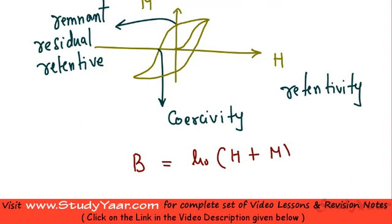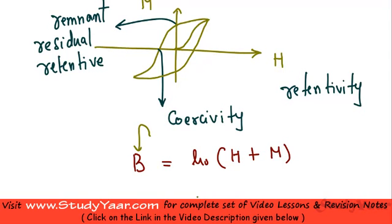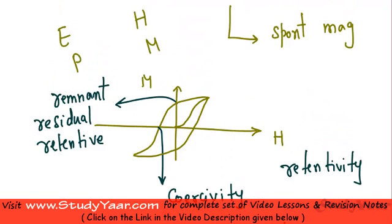Recall that the magnetic flux density is given by B = μ₀H + M. In a ferromagnet, the magnetization term M is more pronounced and basically determines your magnetic flux density. So you can say B is approximately equal to μ₀H + M. If you trace a graph between flux density B and magnetic field H, you also get the same hysteresis loop.